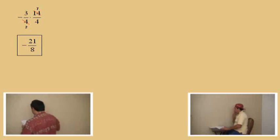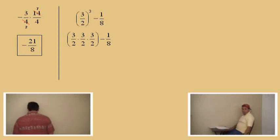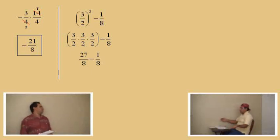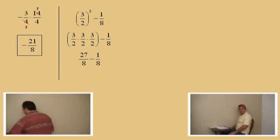3 halves cubed subtract 1 eighth. Okay. Now, Charlie, what's 3 halves cubed mean? 3 halves times 3 halves times 3 halves. That's right. 3 halves times 3 halves times 3 halves. Now, how do you multiply 3 halves times 3 halves times 3 halves? Straight across the top. Straight across the top. Straight across the bottom. Giving you what, Charlie? 27 eighths. 27 over 8. Now, 27 over 8 subtract 1 eighth. Charlie, what's 27 apples take away one of your apples? 26 apples. 26 apples. Very good. So, 27 eighths take away 1 eighth does give you what, Charlie? 26 eighths. 26 eighths. Very good.